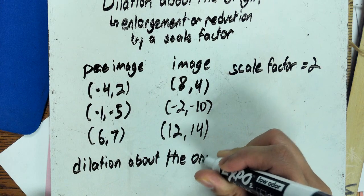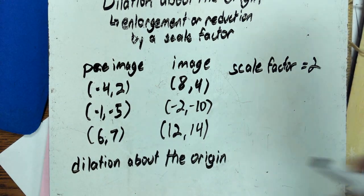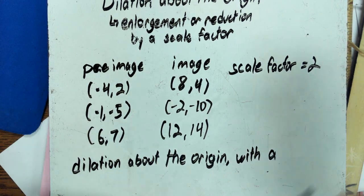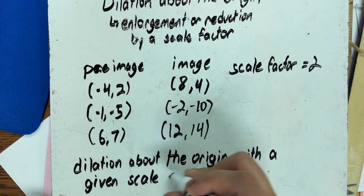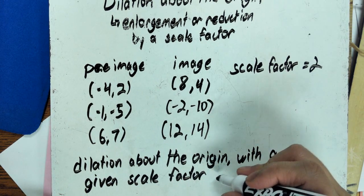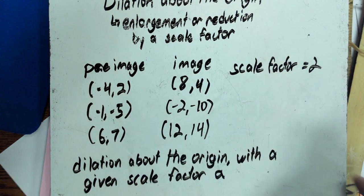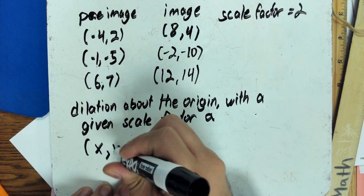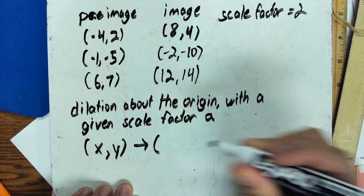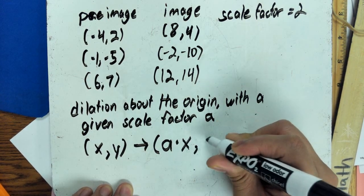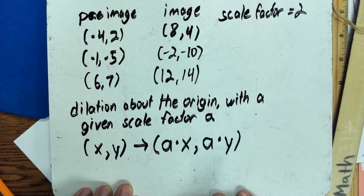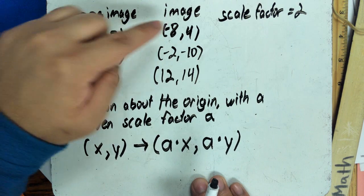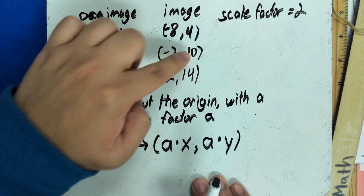The rule for dilation about the origin with a given scale factor — I'll call it a — is: your original point x, y will transform into a times x, a times y. In our example: negative four times two is negative eight, two times two is four; negative one times two is negative two; negative five times two is negative ten, and so on.